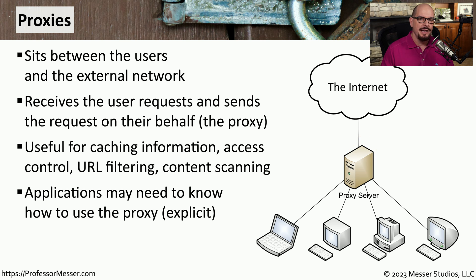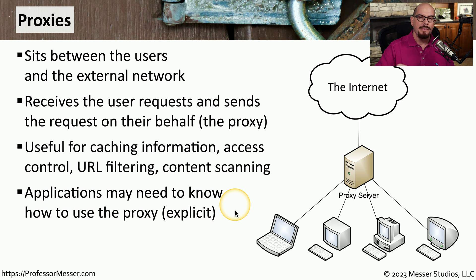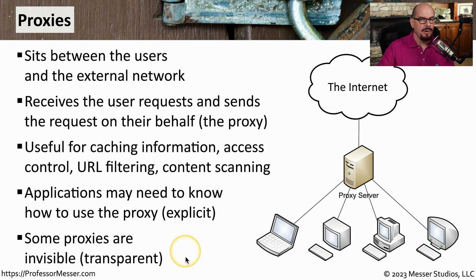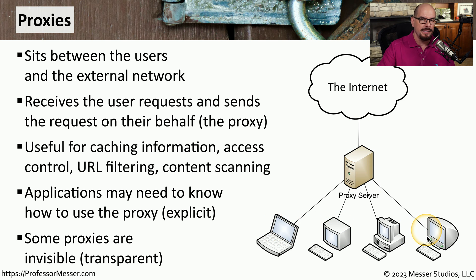There are generally two different types of proxies. One requires configuration in the application or operating system — this is an explicit proxy, because you explicitly name the IP address or name of the proxy. Another type is a transparent proxy. From the end user's perspective, they have no idea the proxy is in place. It sits in the middle of the conversation and automatically makes requests on the user's behalf without any configuration changes in the operating system.